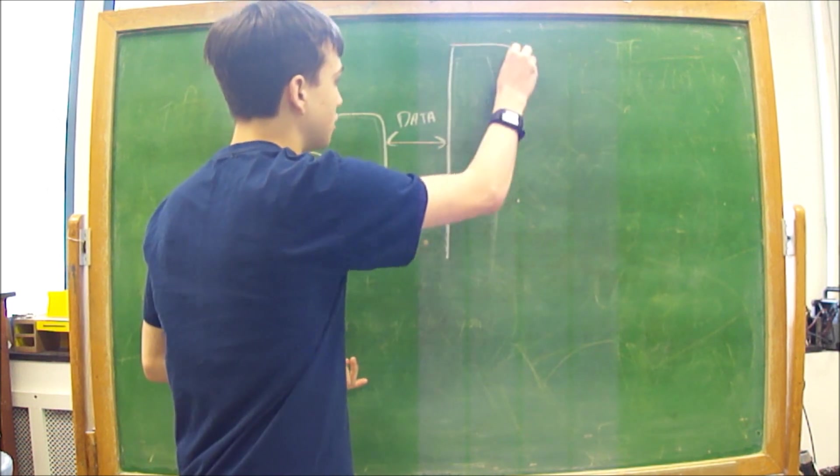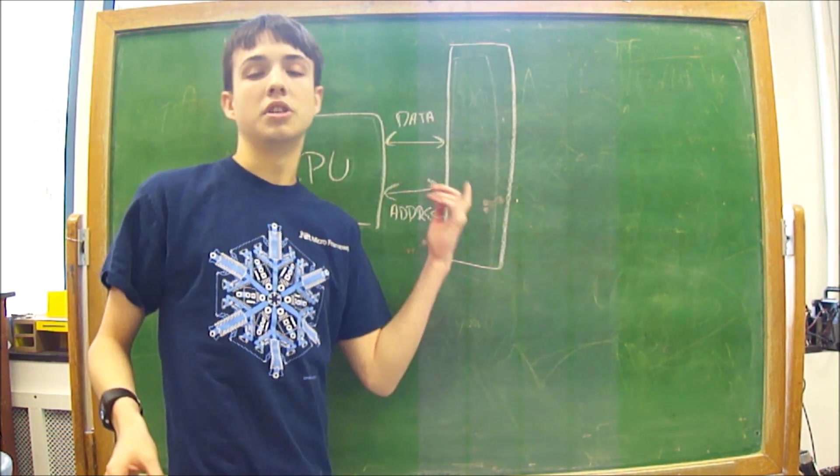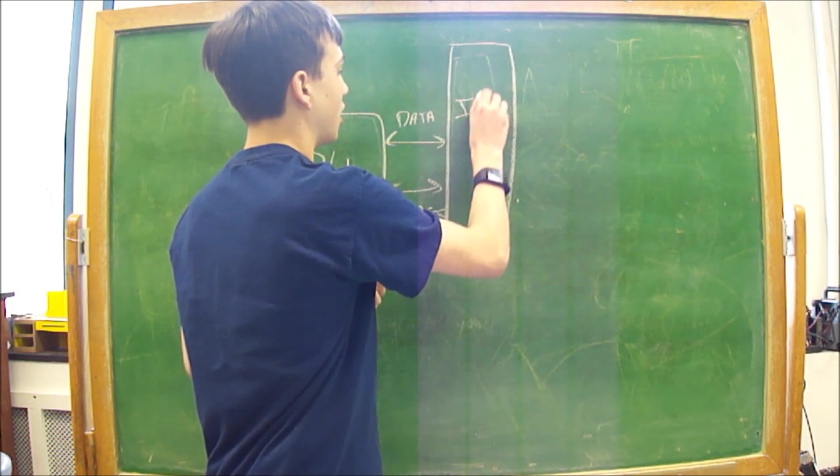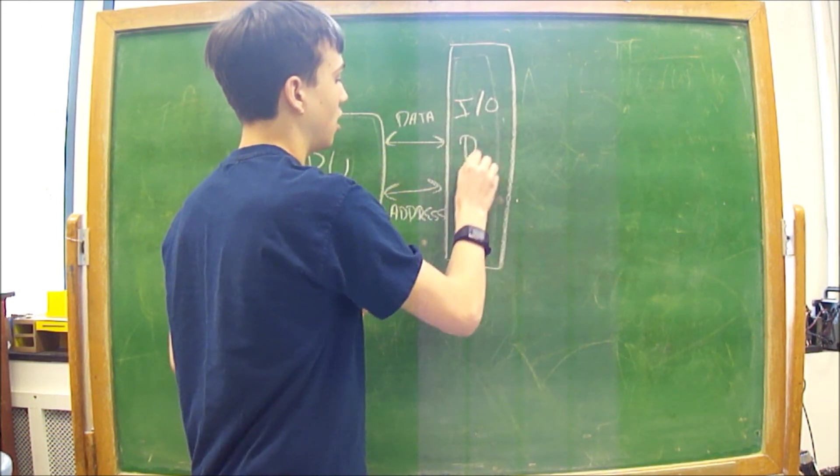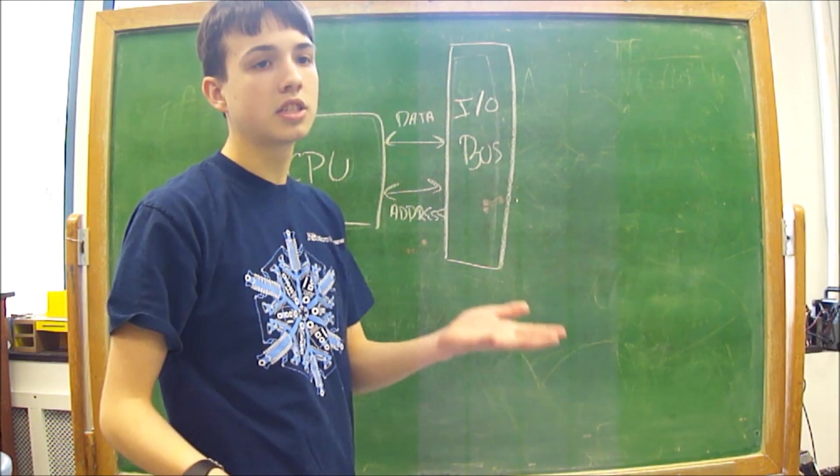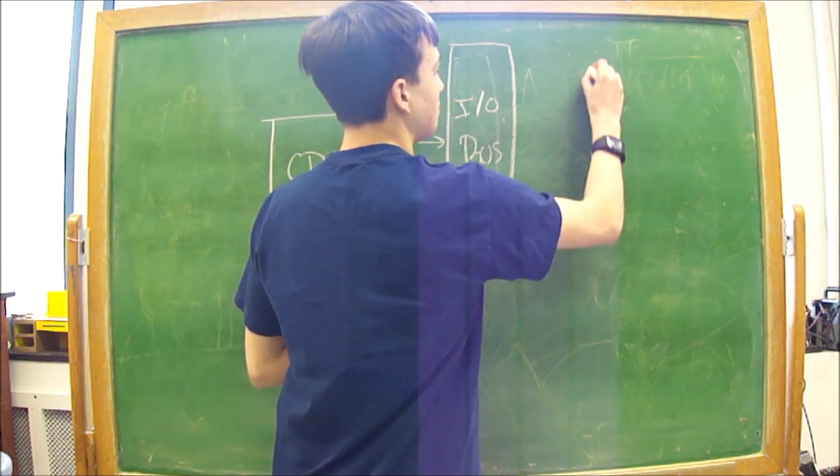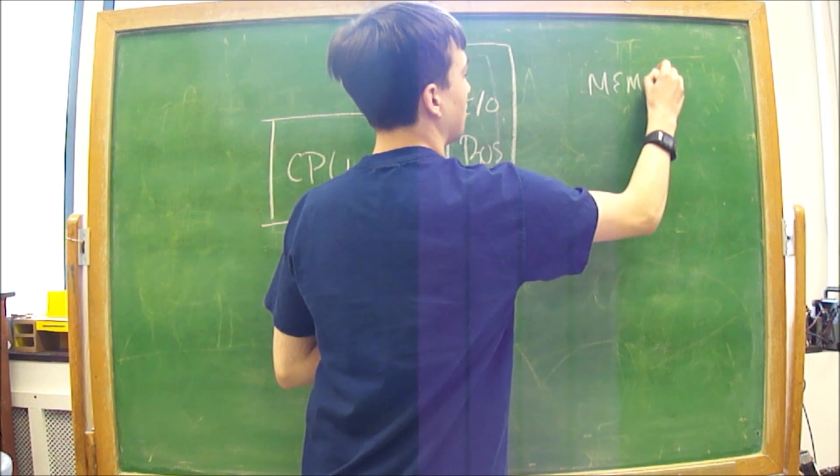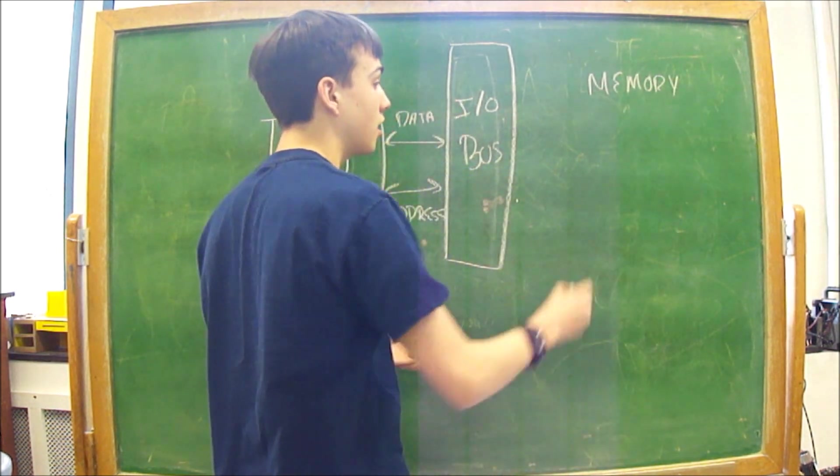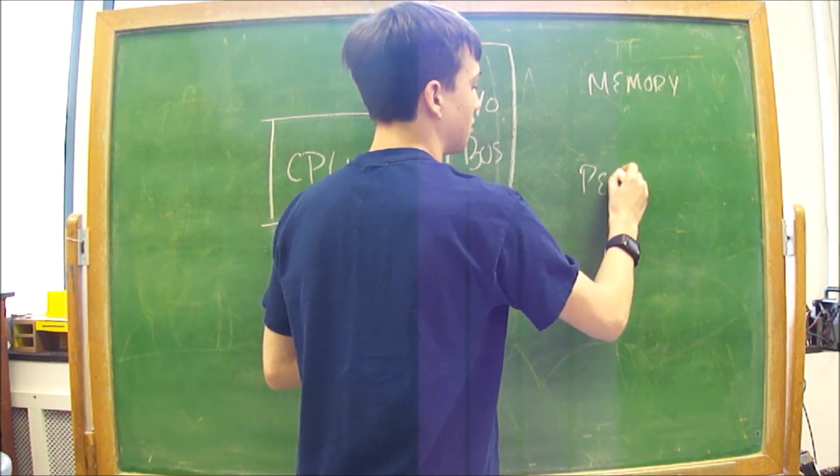Those are both connected to a piece of material called the IO bus. And the IO bus connects the CPU through external circuitry to memory and peripherals.